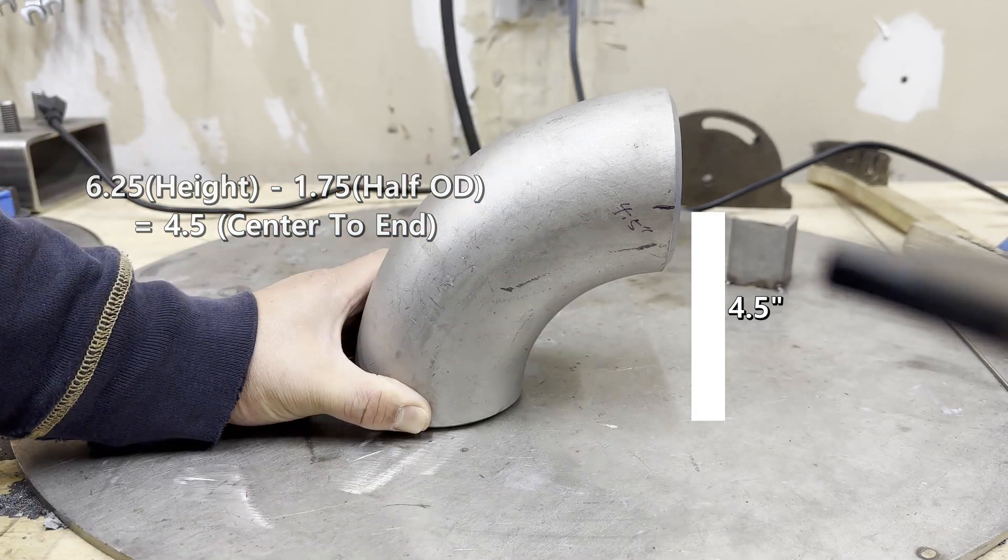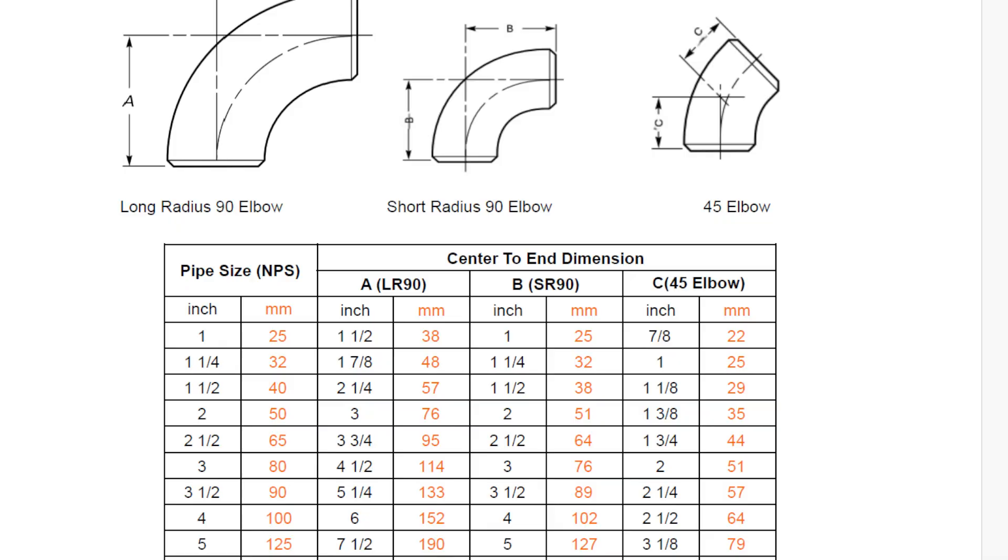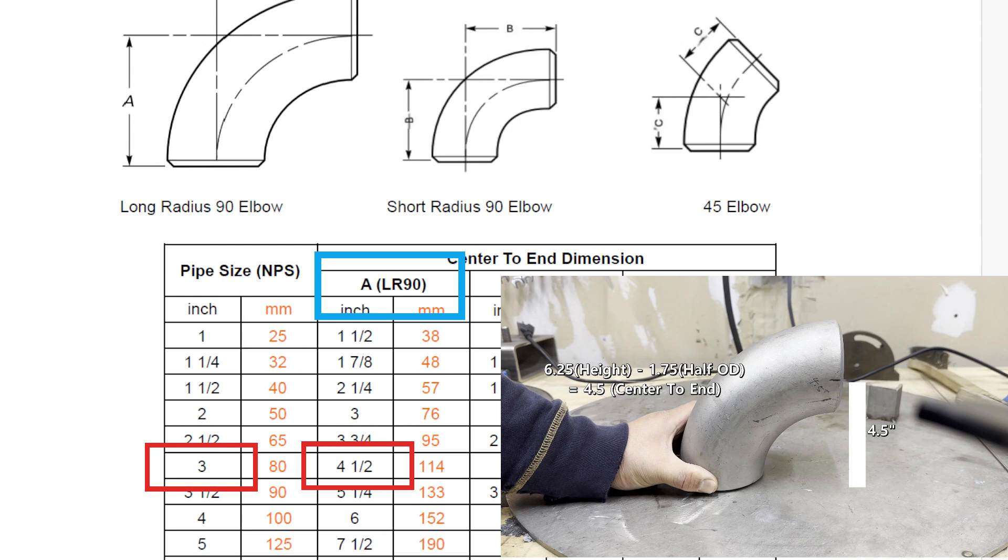Second, you can use the elbow dimension chart. First, find 3 in the pipe size column. If you are comfortable with millimeters, refer to the red number next to it. Then, check the 90 long radius column number. It is 4 and a half. Actually, the measurements I measured and the measurements using the chart are the same.